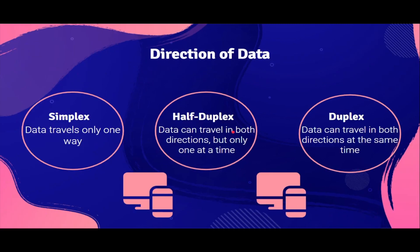First, direction of data. We have three main topics under this: simplex, half duplex, and full duplex. So first, simplex. Simplex means data travels only in one way — it's unidirectional. It can only go from the first device to the second device.